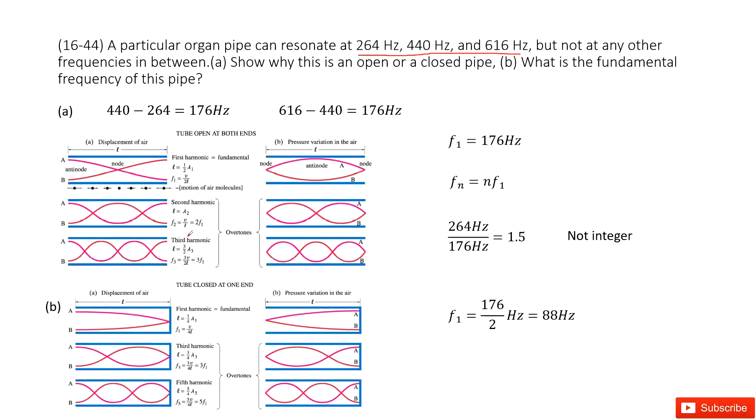The overtones—the second harmonic is 2F1, third harmonic is 3F1. So we can see that Fn equals n times F1.